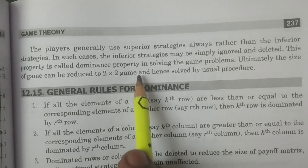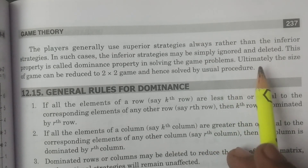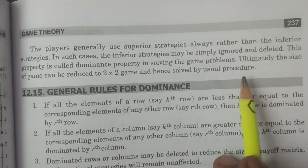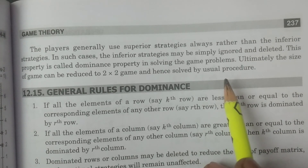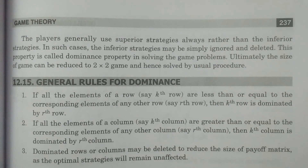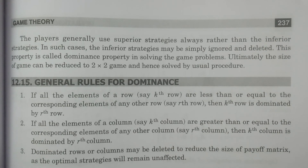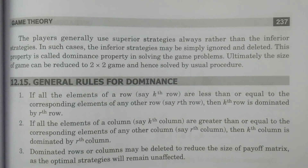This property is called the dominance property or dominance principle in solving game problems. Our objective is that ultimately the size of the game can be reduced into a 2 by 2 rectangular game, and then solved by the usual procedure — considering formulas P1, P2, Q1, Q2 and the value of the game. Dominance principle is a technique for solving any M by N game by reducing it to a 2 by 2 game using the regular procedure for rectangular games without a saddle point.